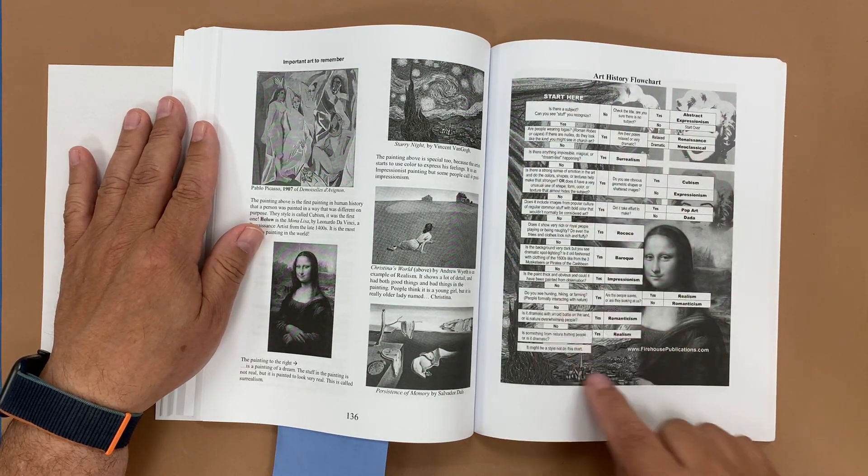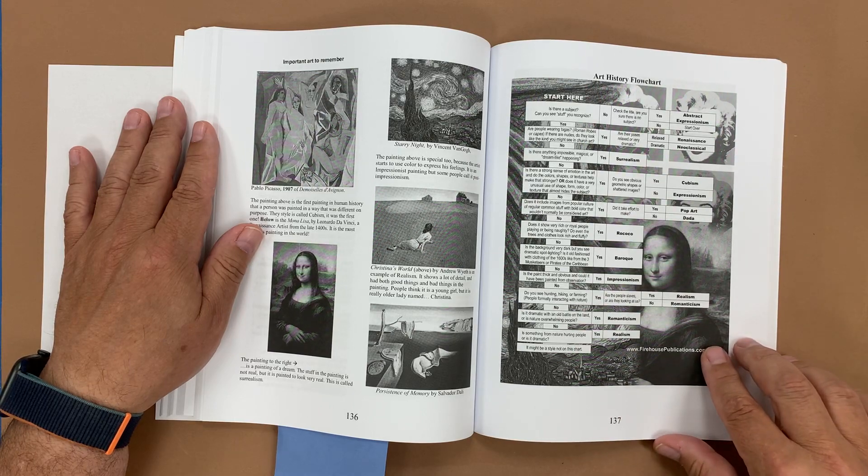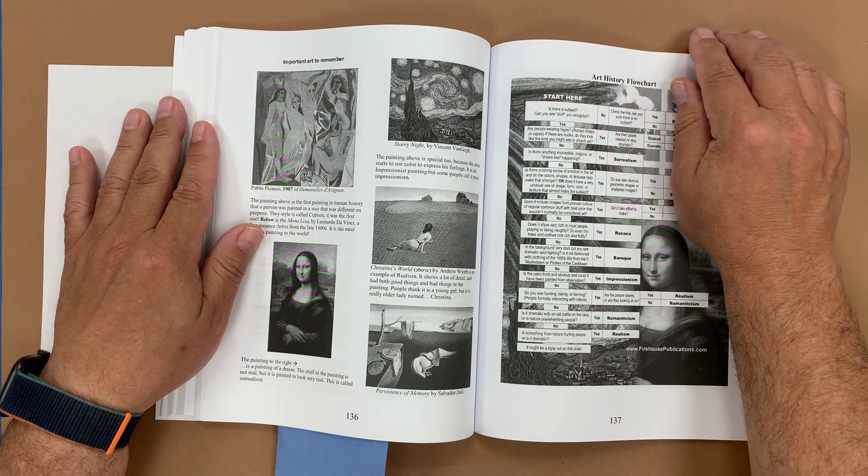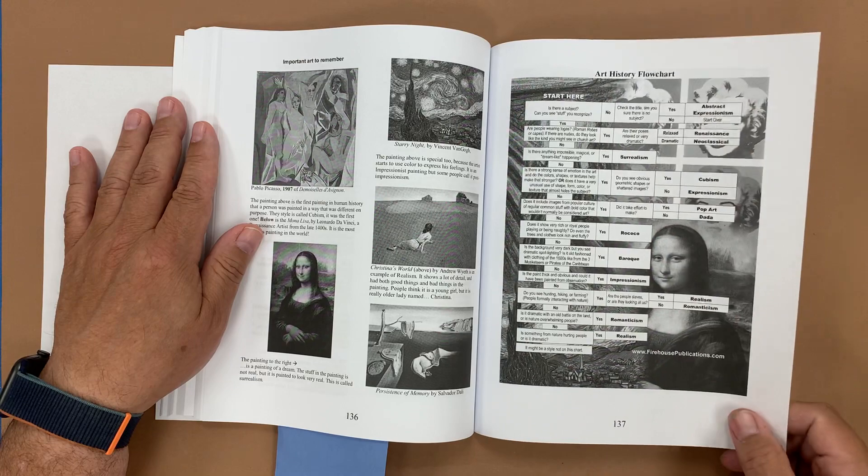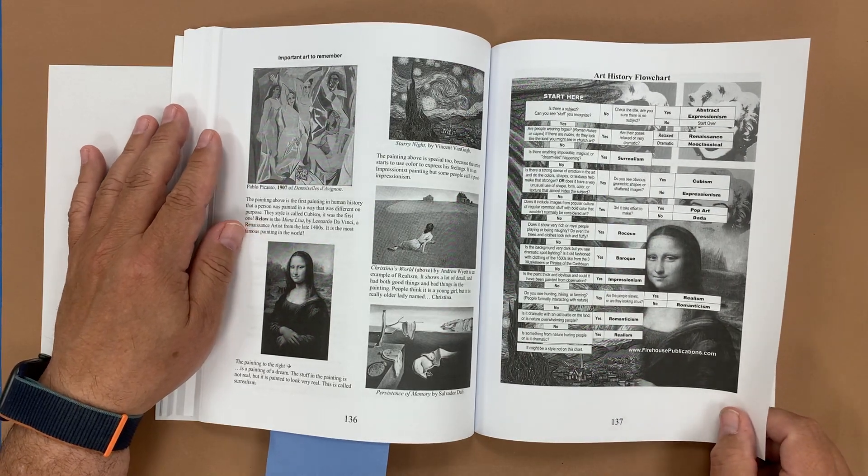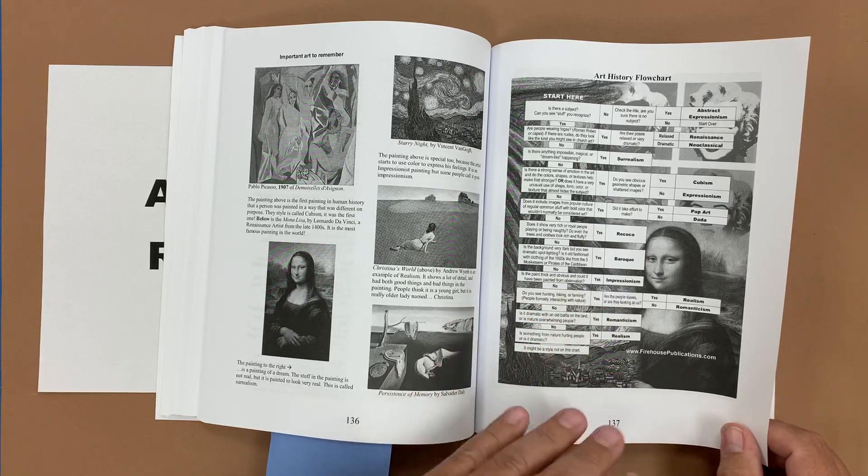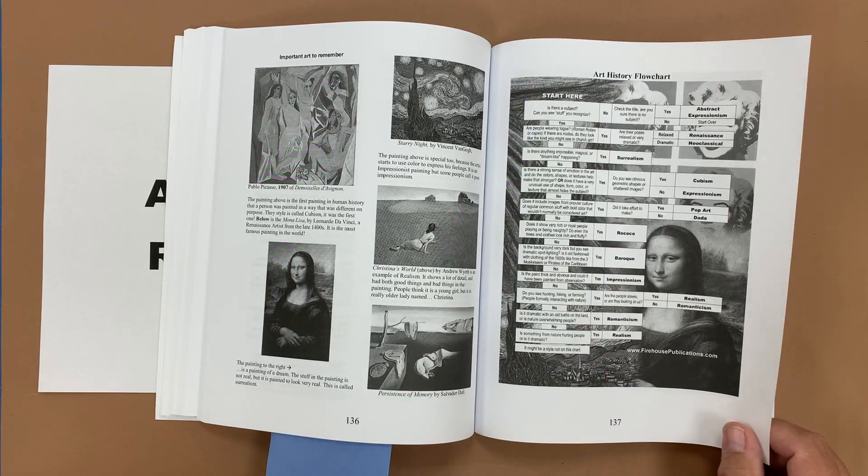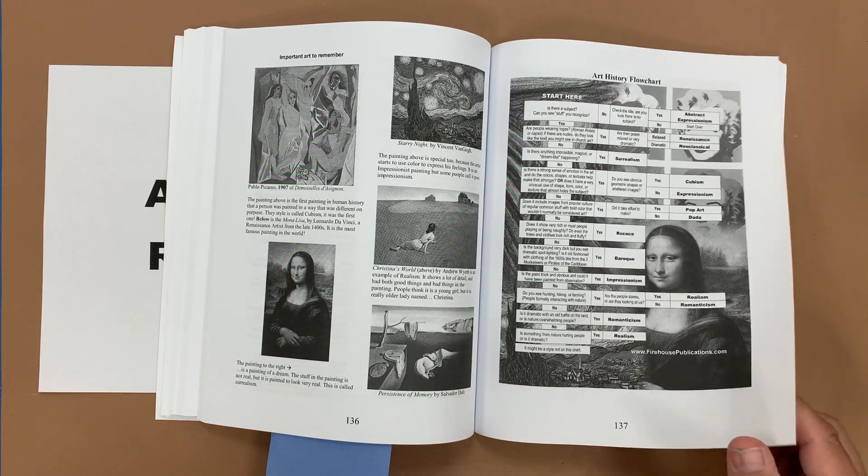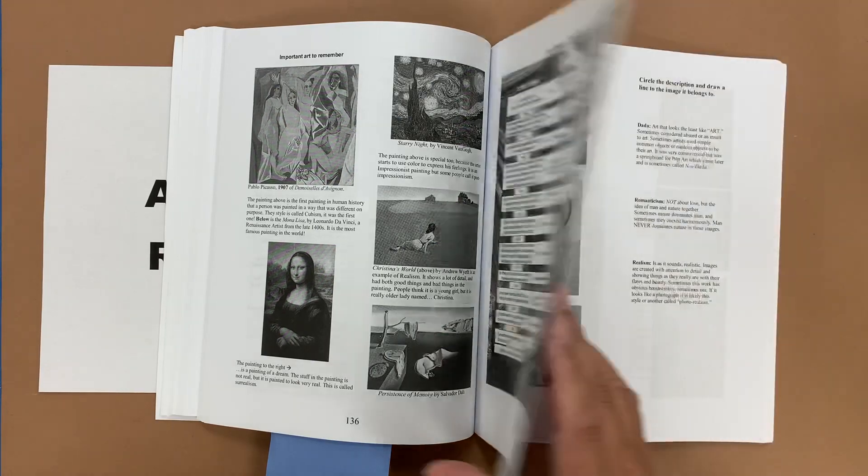So this is a fun way for students to kind of learn about their school of art and I actually do a game where I put teams of students where I post a famous work of art and then I have students use the flowchart to guess what school of art and they earn points on that that are then added into their final exam or on their research paper.